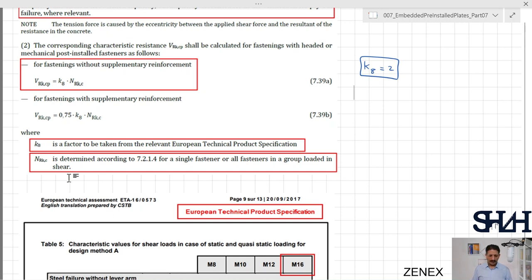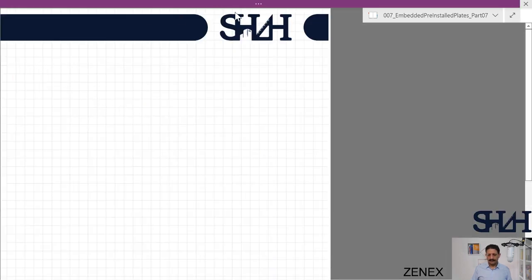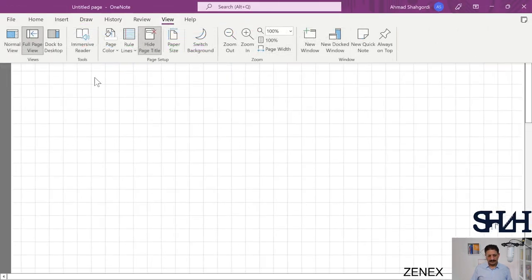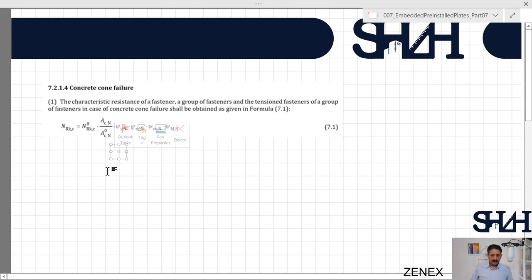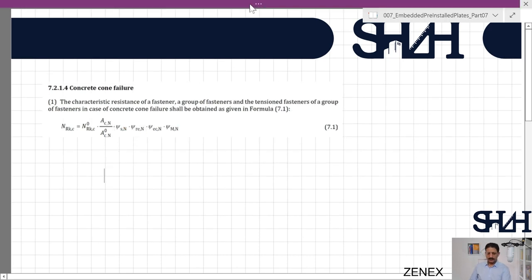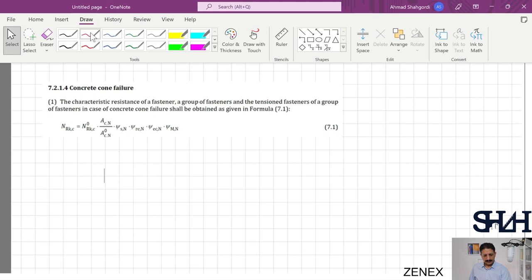That's the same clause for concrete cone failure verification 7.2.1.4. The only difference is that in concrete cone failure verification we need to consider only fasteners which are under tension, but here all fasteners which are collaborating in taking the shear force need to be considered for determination of N_Rk,c.